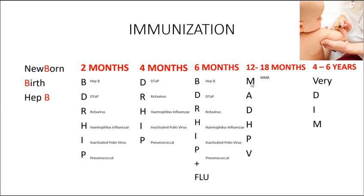At 12 to 18 months, we're going to use our mad HPV. So that's your MMR, your hepatitis A, your DTAP, your hemophilus influenza, your pneumococcal, and then varicella.